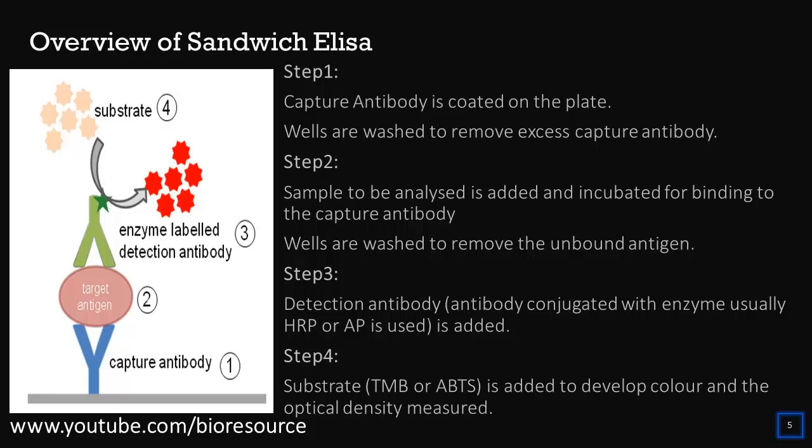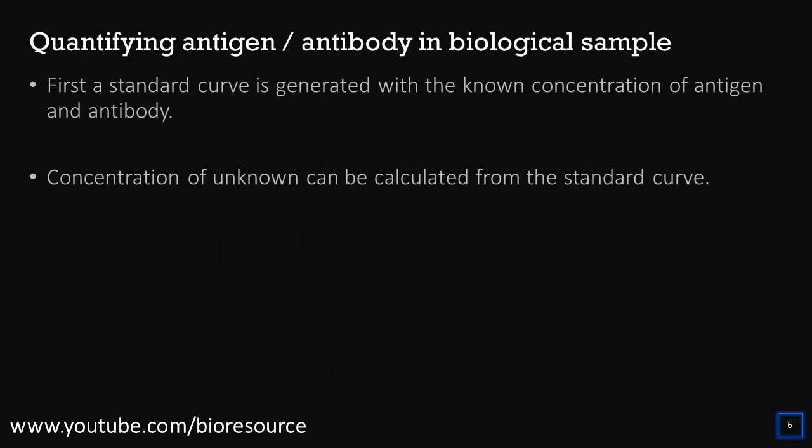Generally, HRP or alkaline phosphatase is used as the enzyme. In the fourth step, substrate for the enzyme is added to develop color. The substrates generally used are TMB or ABTS. Once the color is developed, optical density is measured. To quantify the antigen or antibody in the sample, first a standard curve needs to be generated using known concentrations of antigen or antibody, and the concentration of the unknown can be calculated from the standard curve.